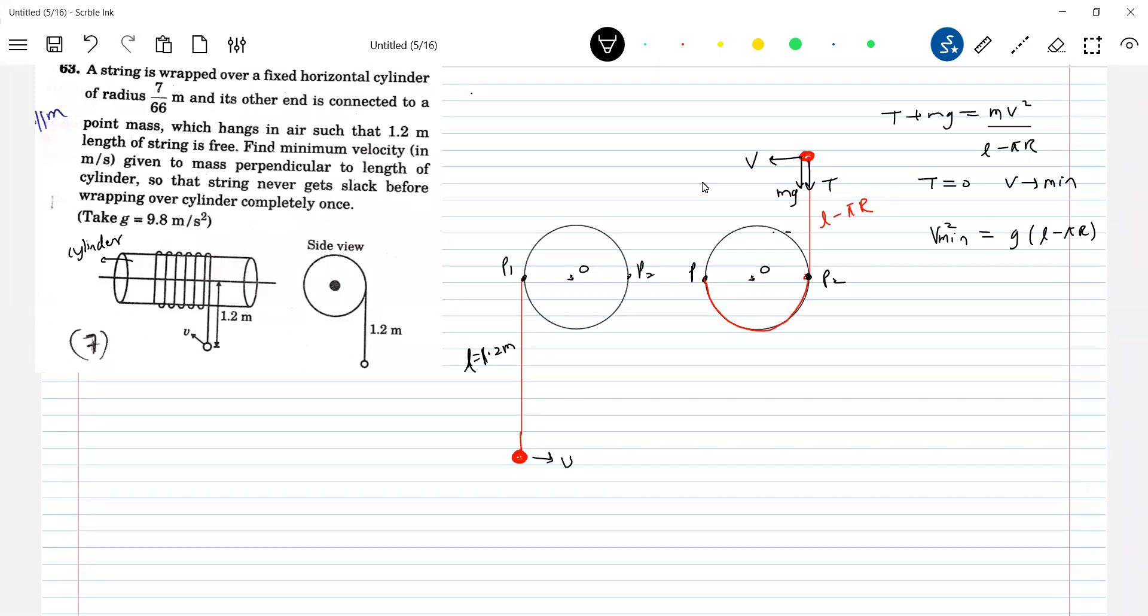Then if V is minimum, then the initial velocity of what we projected, that will be minimum. So I'll apply conservation of mechanical energy. M U minimum square is equal to Mg L plus L minus pi R plus M V minimum square by 2. Substitute V minimum square here. Solve for U minimum.